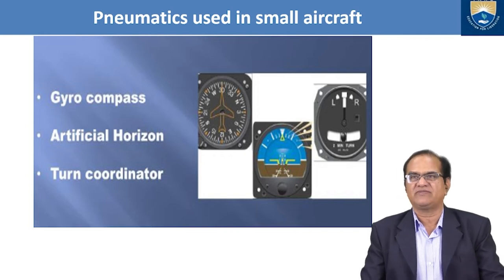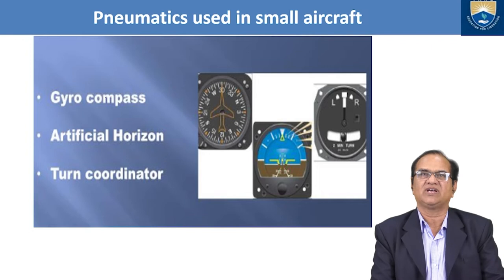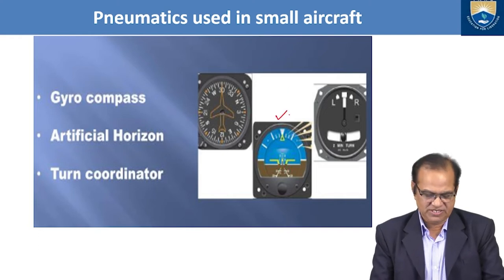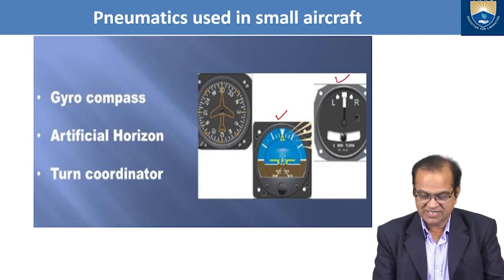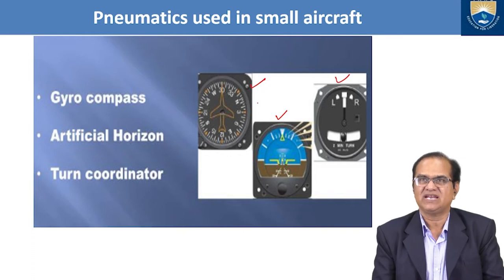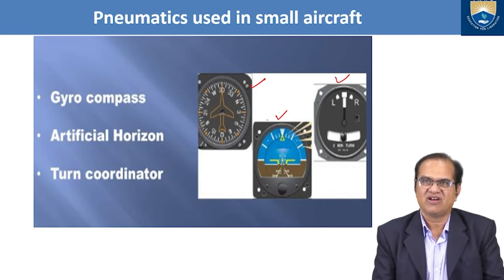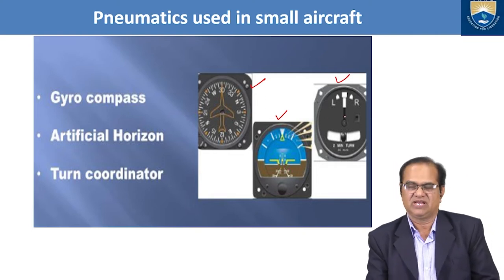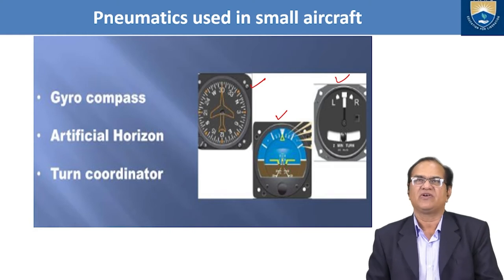Pneumatics used in small aircraft: we have the gyro compass, artificial horizon, and turn coordinator. These three instruments are fitted here and used for general aviation aircraft. The gyro compass gives the direction of the aircraft, and the turn indicator shows how the aircraft is turning — all found out by these pneumatic equipment.